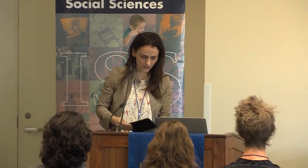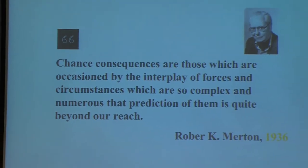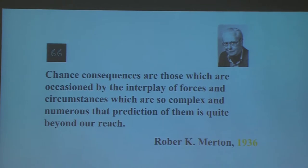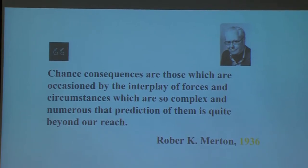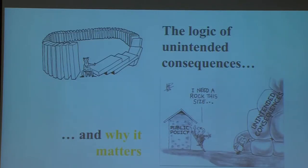It's great to speak after Chris because I also want to talk about unintended consequences. My answer to the question of what we've learned after a decade of computational social science is that we can now crack the problem of unintended consequences — decode the mechanisms that make individual actions lead to social outcomes not foreseen or intended by any of the actors involved. The puzzle of unintended effects is a very old one. Sociologist Robert Merton back in 1936 turned this into a topic for academic discussion, writing that 'chance consequences often result from the interplay of forces so complex that prediction of them is quite beyond our reach.'